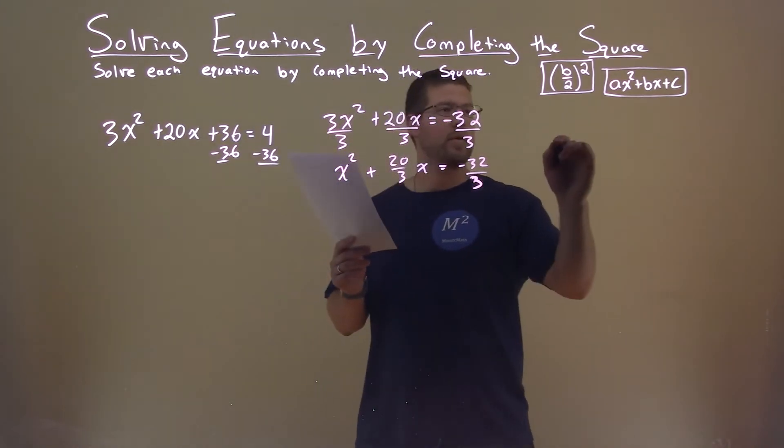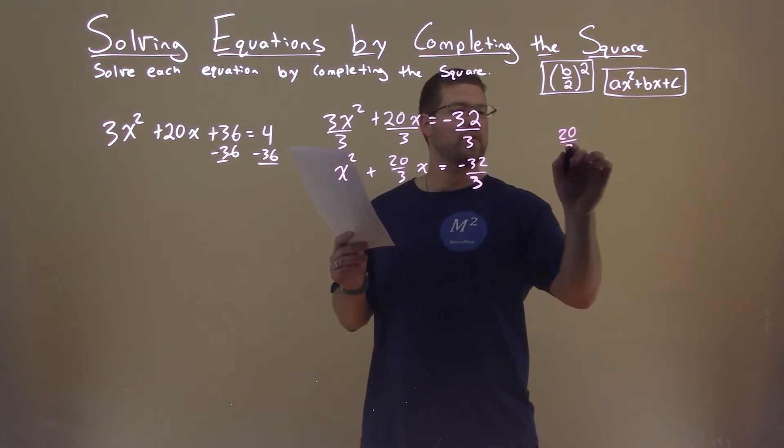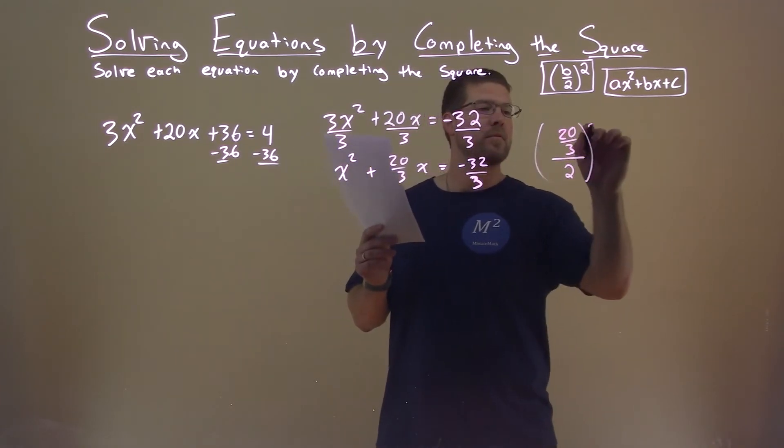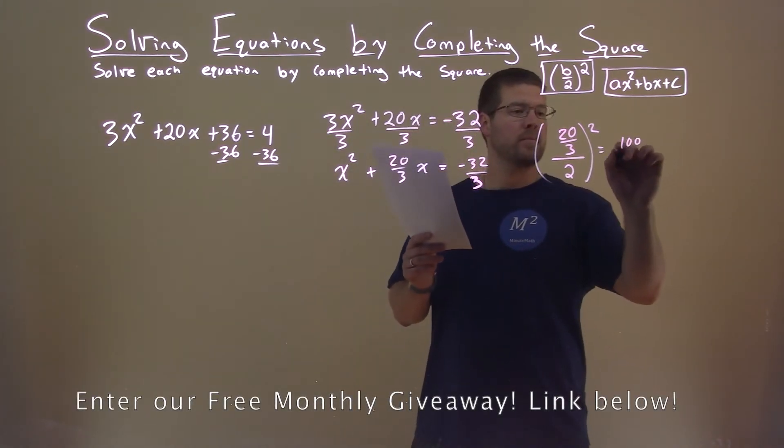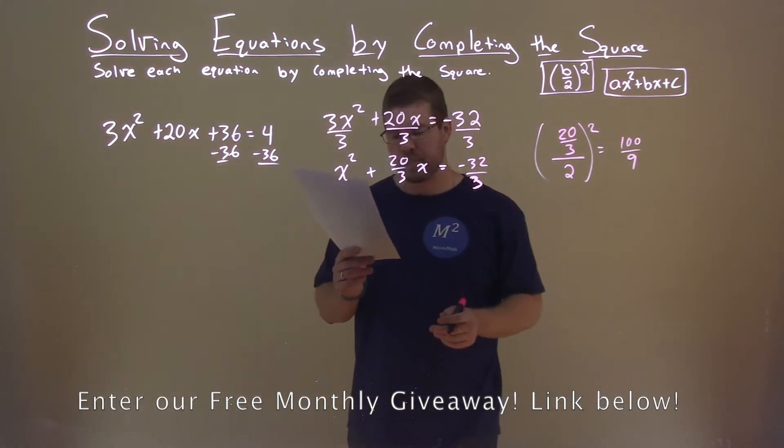20 divided by 3, I'm going to plug it into this formula. 20 divided by 3, all divided by 2 squared. This comes out to be 100 over 9. Keep our fractions in line.